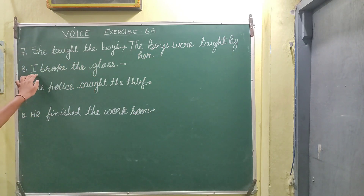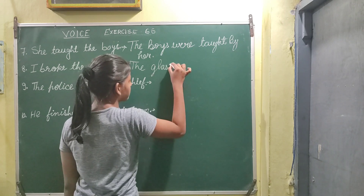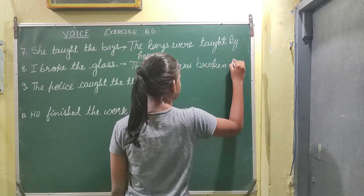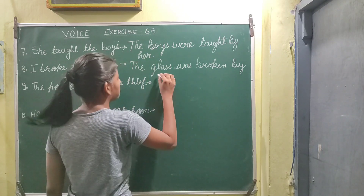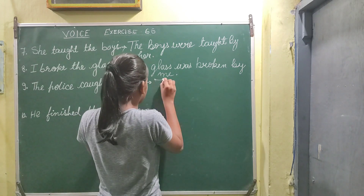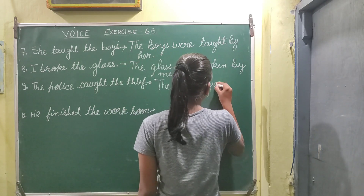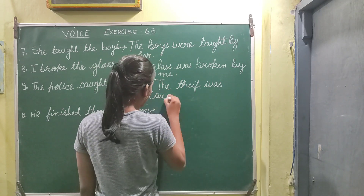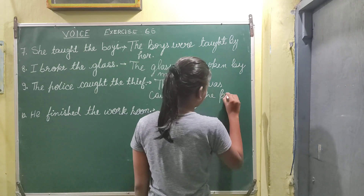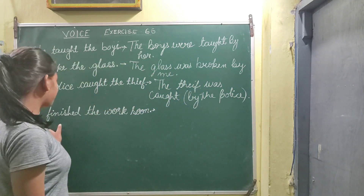Next is 'I broke the glass.' So: 'The glass was broken by me.' Next, 'The police caught the thief.' So: 'The thief was caught by the police.'